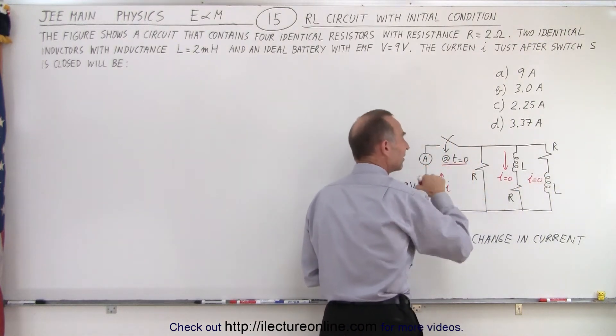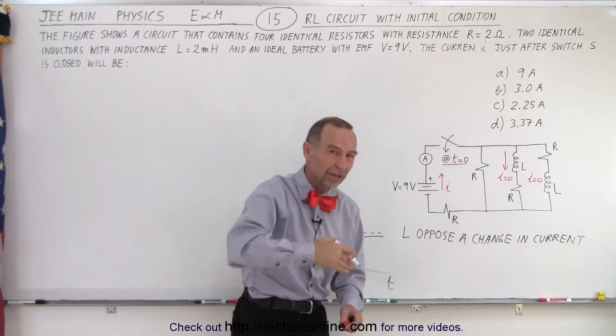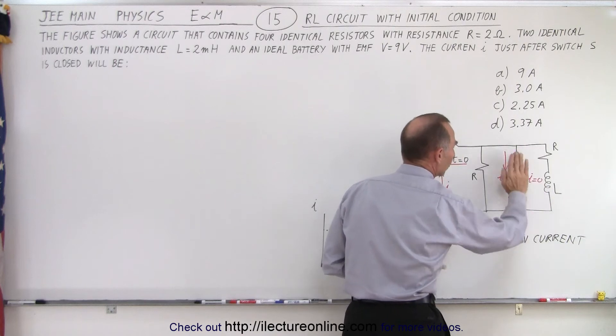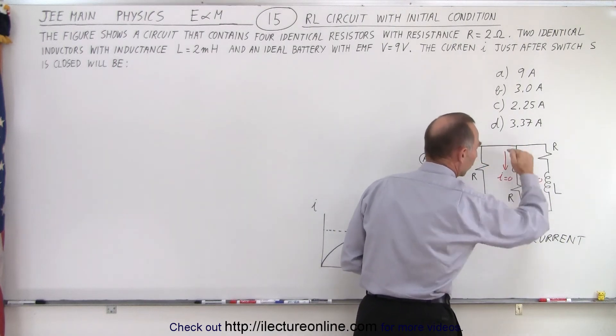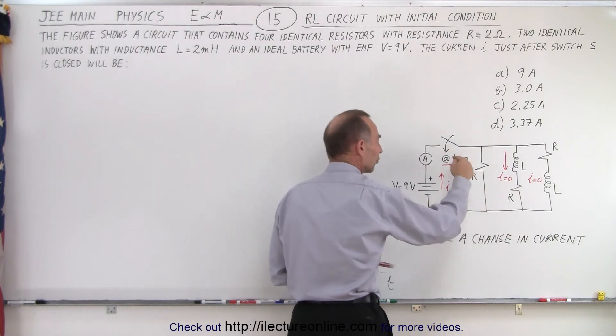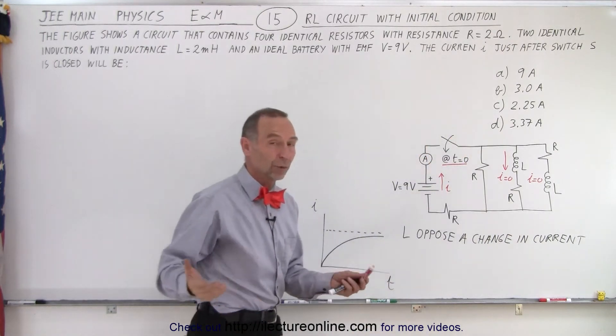Again, at the moment that T equals zero, at the moment that the switch is closed, which means that those two branches act as if they're not there, because no current is flowing through there, and only current will be flowing through this part of the circuit.